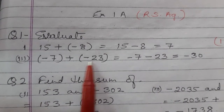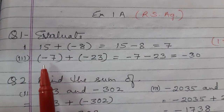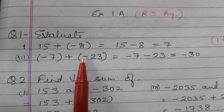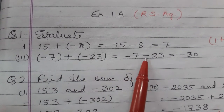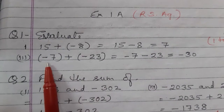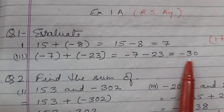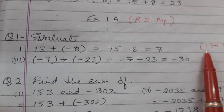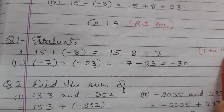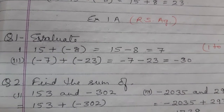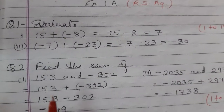Here both the integers are negative and they have to be added. So minus 7, and plus into minus is equal to minus, giving minus 7 minus 23 equal to minus 30. The rest of questions 1 to 4 you have to do yourself in your classwork copy.